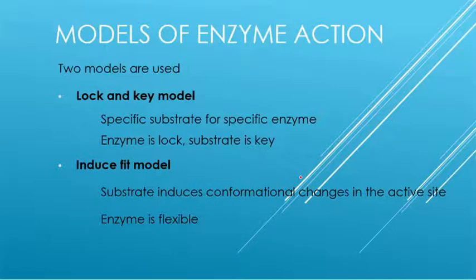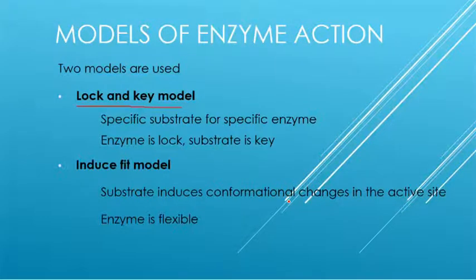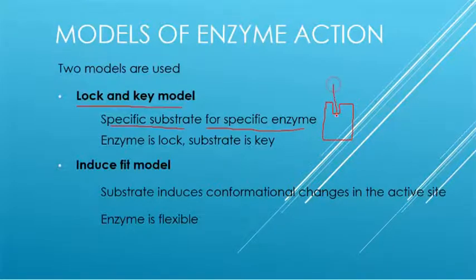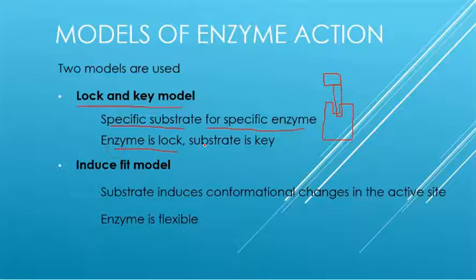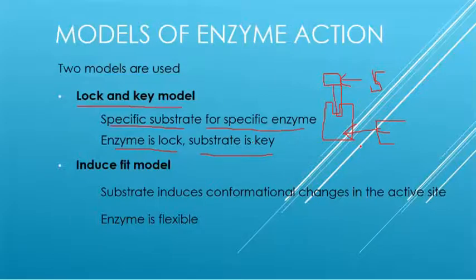There are different models used to describe enzyme action. The first model is known as the Lock and Key model, first proposed in 1894 by Emil Fischer. He said that specific substrates are present for specific enzymes, just like one lock can be opened by one particular key. In this model, the enzyme is the lock and the substrate is the key. The enzyme is a rigid structure with a specific active site to which the substrate binds and is broken down.